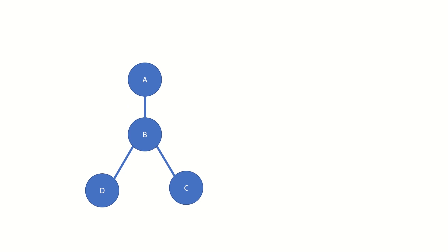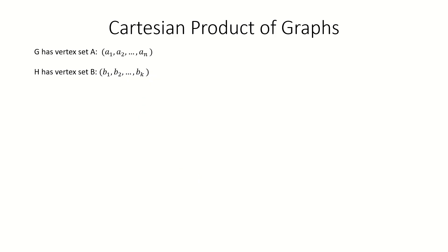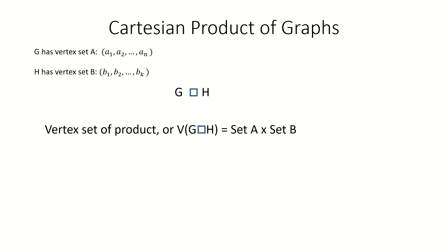Remember that a graph is really a set of vertices and a set of edges between those vertices. Keeping that in mind, here is the definition of the Cartesian product of graphs. The Cartesian product of two graphs G and H — where G has vertex set A with N vertices and H has vertex set B with K vertices — is a graph whose vertex set equals the Cartesian product of the vertex sets of G and H, with each vertex representing a pair of one vertex from G and one vertex from H.